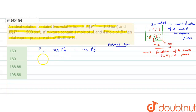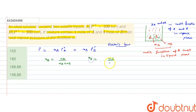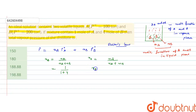XA, the mole fraction of A in liquid phase, equals NA divided by (NA + NB). We are given 1 mole of A and 4 moles of B, so XA = 1/(1+4) = 1/5. And XB, the mole fraction of B, equals NB/(NA + NB) = 4/(1+4) = 4/5.